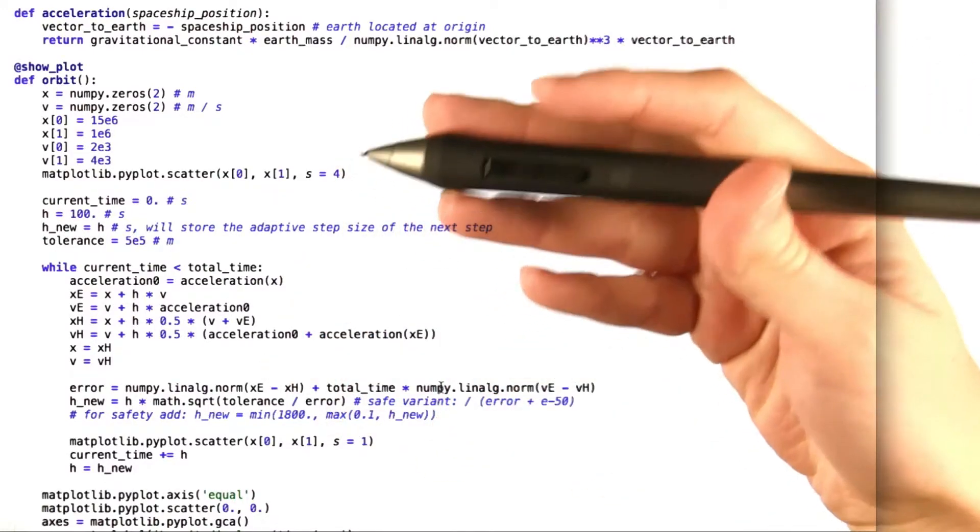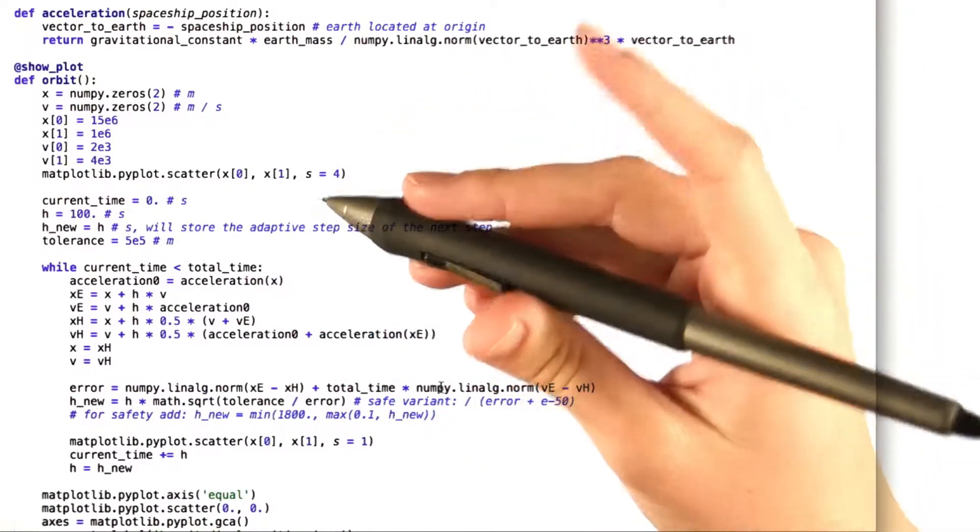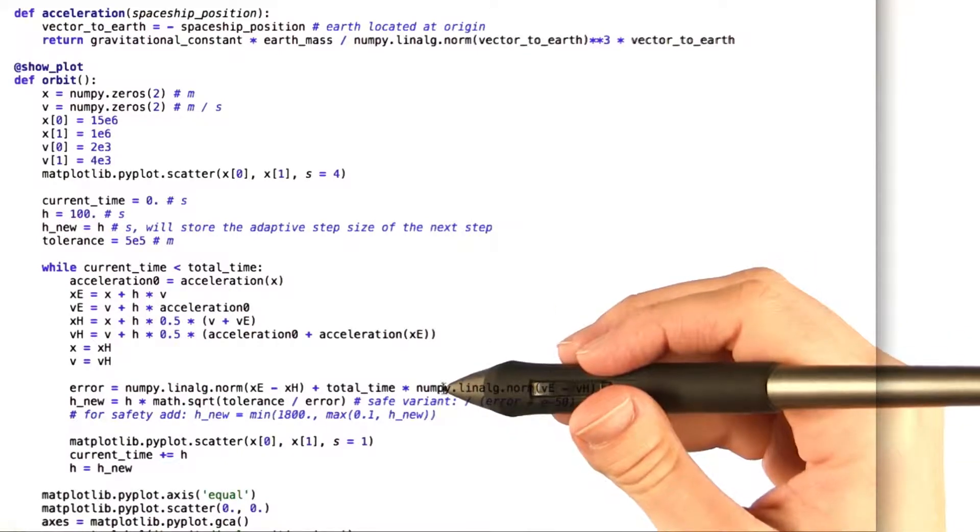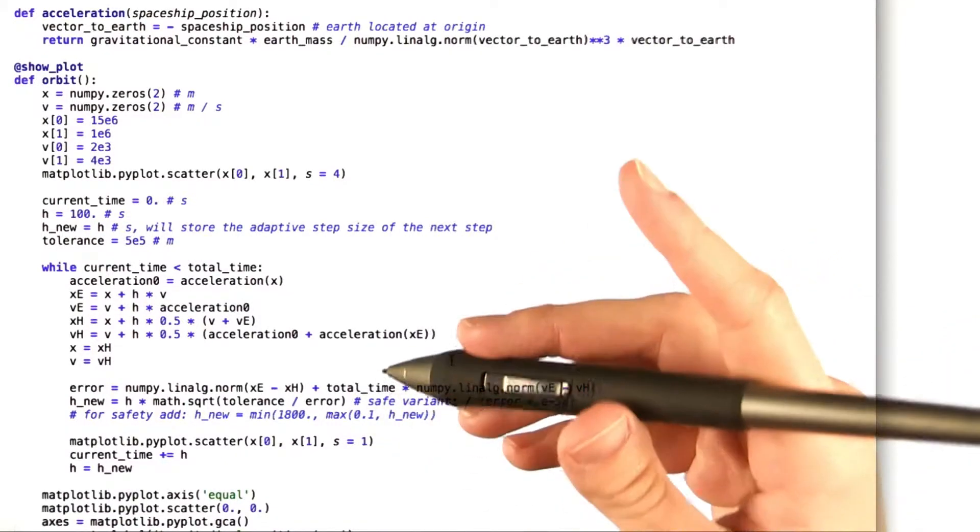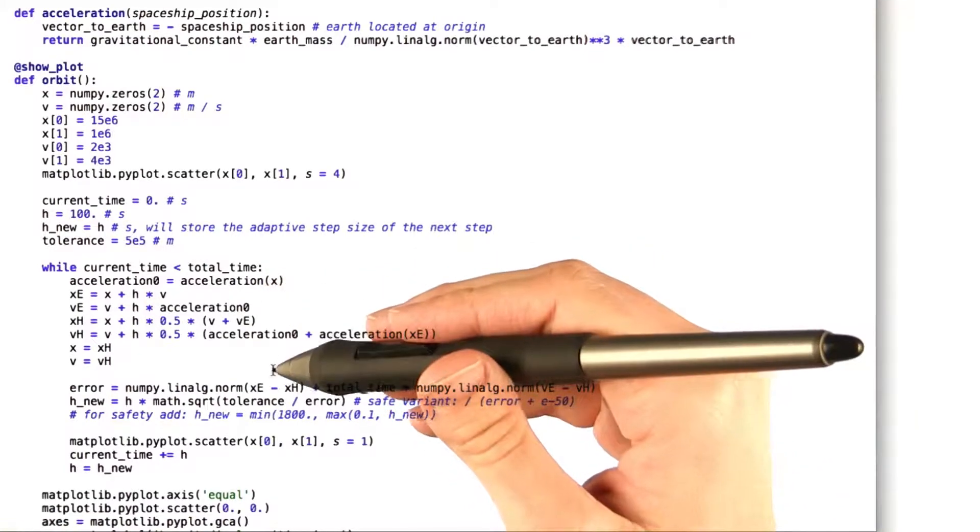So what we find here is almost a literal interpretation of the equations. However, it's important to notice we compute h_nu as a modification of h, but only use h in the implementation of Heun's method up here.